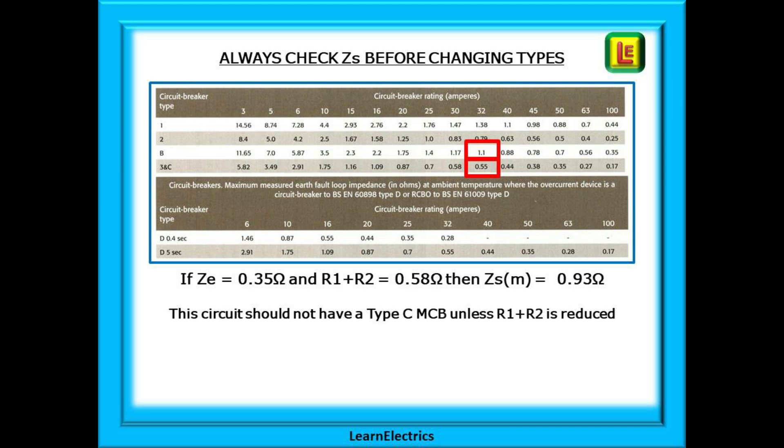We cannot change ZE so all we can change is R1 plus R2 and that will most times be difficult or impossible. We can't move the machinery and we can't rewire the circuit.